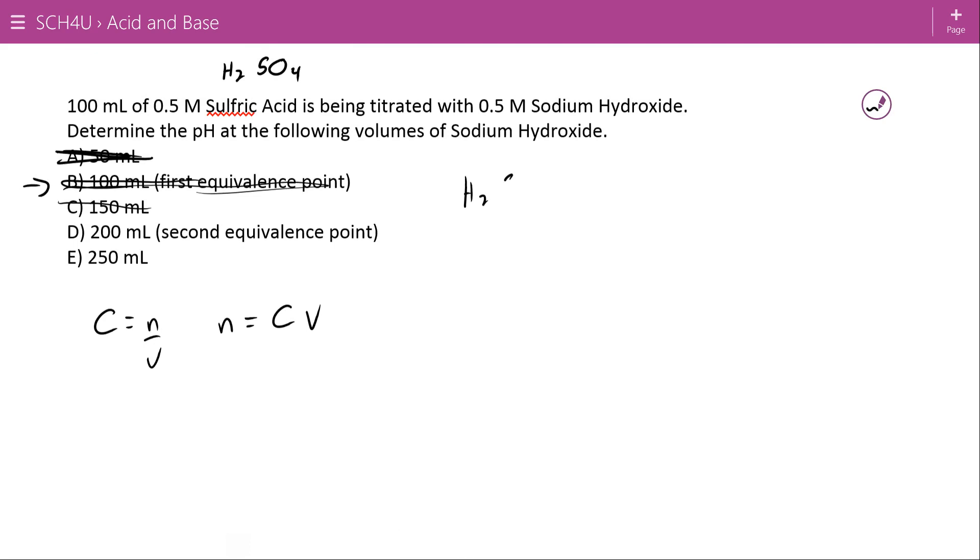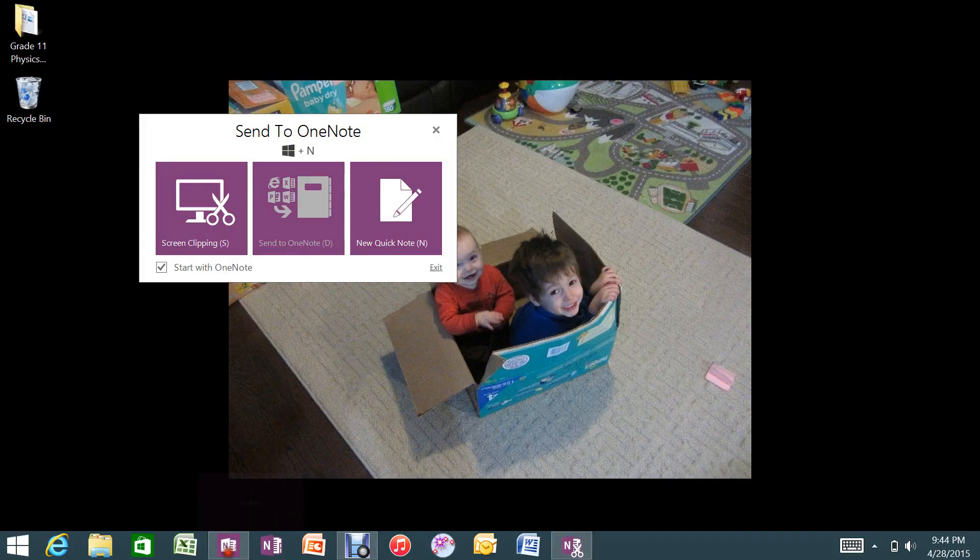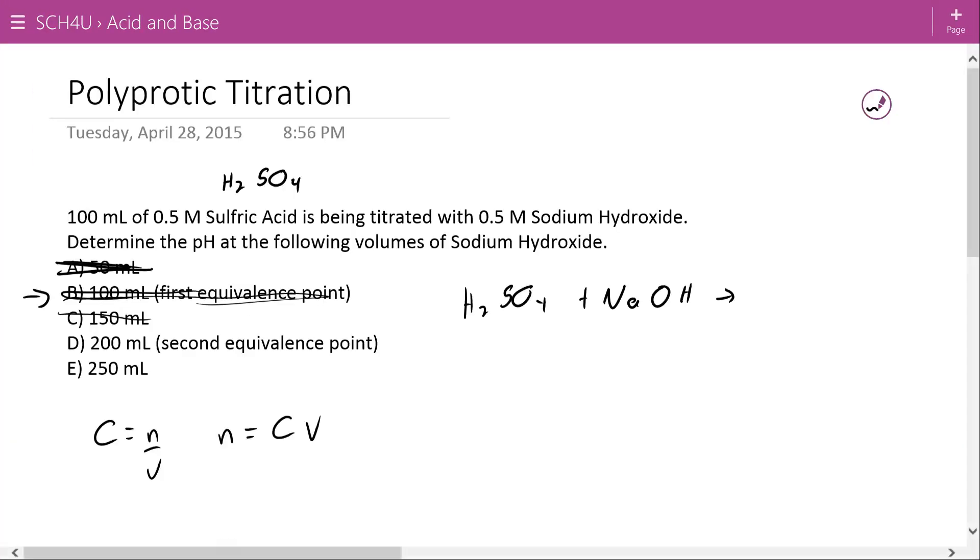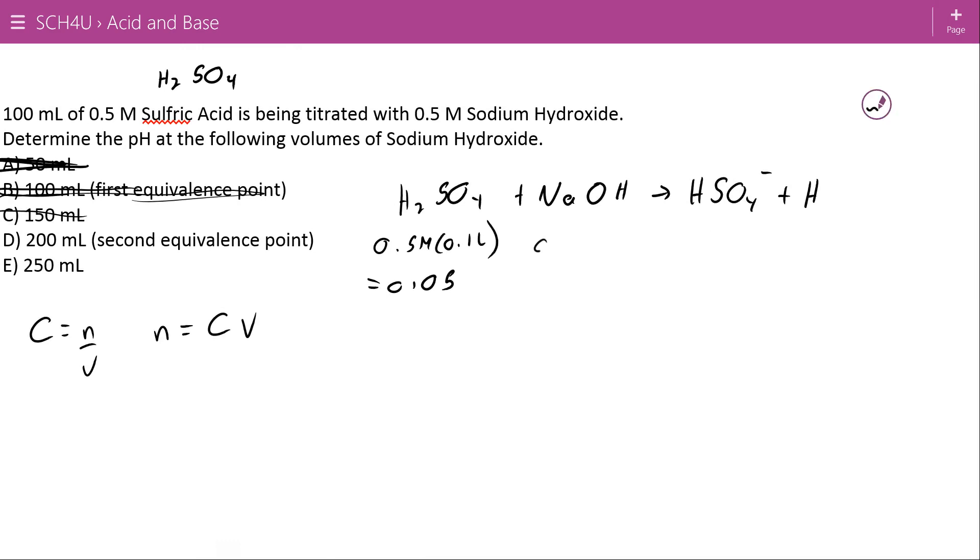So again, the initial reaction H2SO4 plus NaOH initially just peeling the first hydrogen off, making HSO4 minus, a little bit of water and some sodium. Here again I have 0.5 molar and 0.1 liters for 0.05 moles of the H2SO4. Now I'm up to 200 milliliters, so 0.5 molar times 0.2 liters and we get up to 0.1 moles of NaOH.